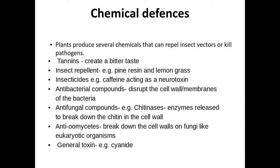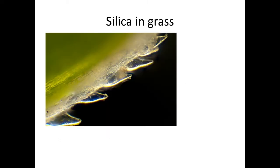Plants also produce general toxins such as cyanide. Another defence is silica in grass, which acts a bit like glass. Herbivores that eat a lot of grass have teeth that grow back very quickly because the silica breaks them down. There is also evidence that invertebrates like caterpillars that eat a lot of grass containing high silica don't grow as well.